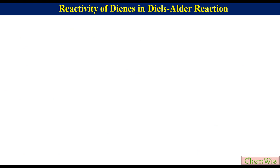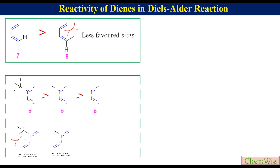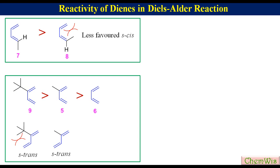Compound 7 is more reactive than compound 8 because in compound 8 the S-cis conformation is less favored due to steric hindrance. Compounds 9 and 5 have higher reactivity than compound 6 due to the presence of electron donor groups, and also the presence of these groups disfavors S-trans conformation and favors S-cis conformation.